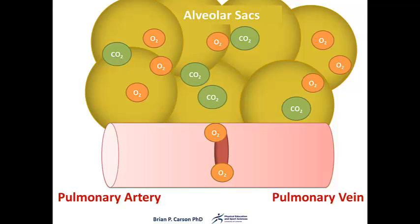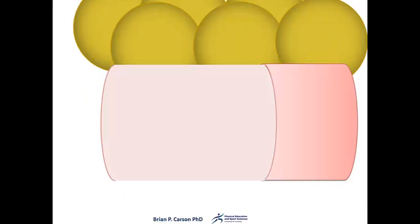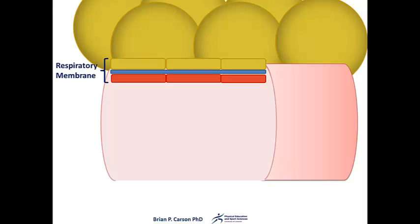So, how is this diffusion of oxygen and carbon dioxide facilitated? The alveolar and capillary spaces are separated by a very thin barrier known as the respiratory membrane. So let's take a closer look at this.